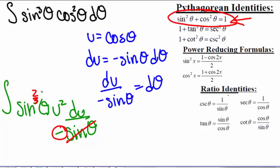To leave us the integral of negative sine squared of theta times u squared times du. And now we can go back to this Pythagorean identity to use the fact that sine squared of theta equals 1 minus cosine squared theta.